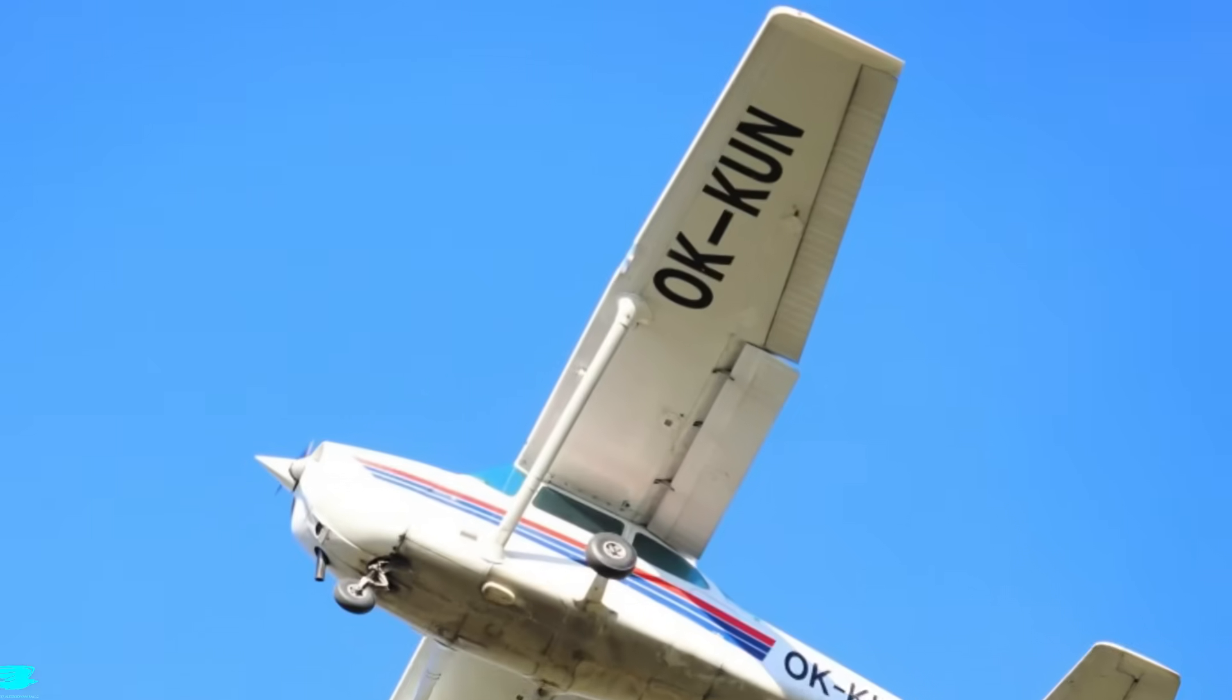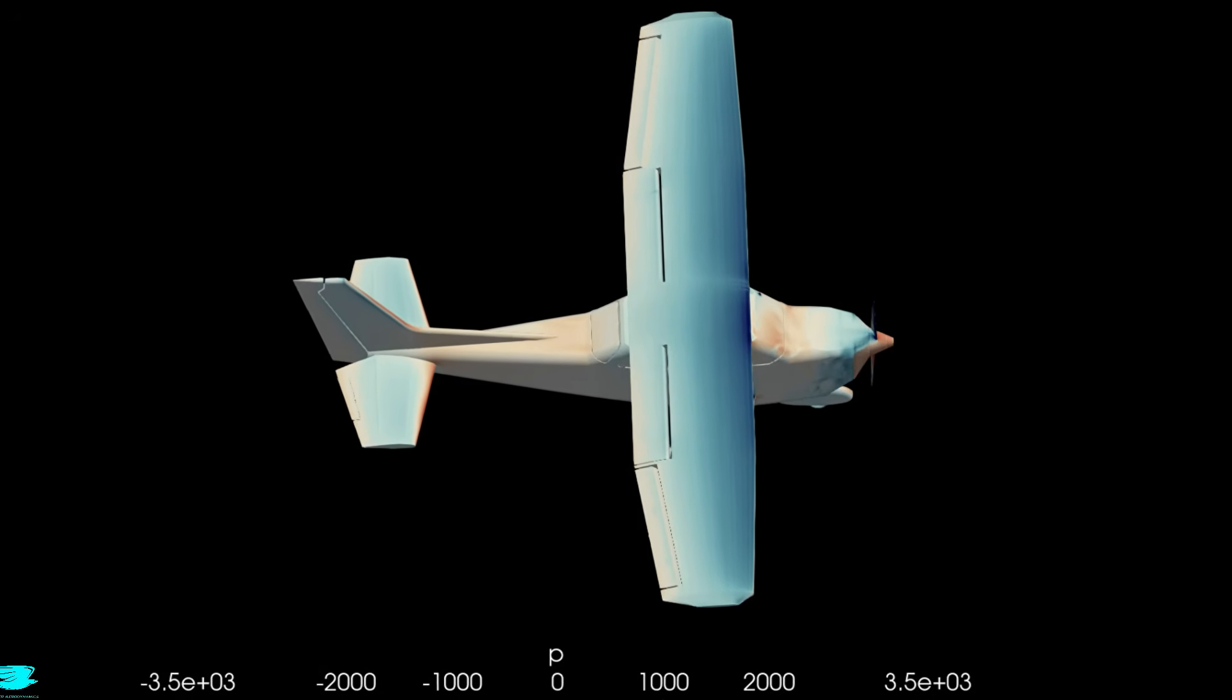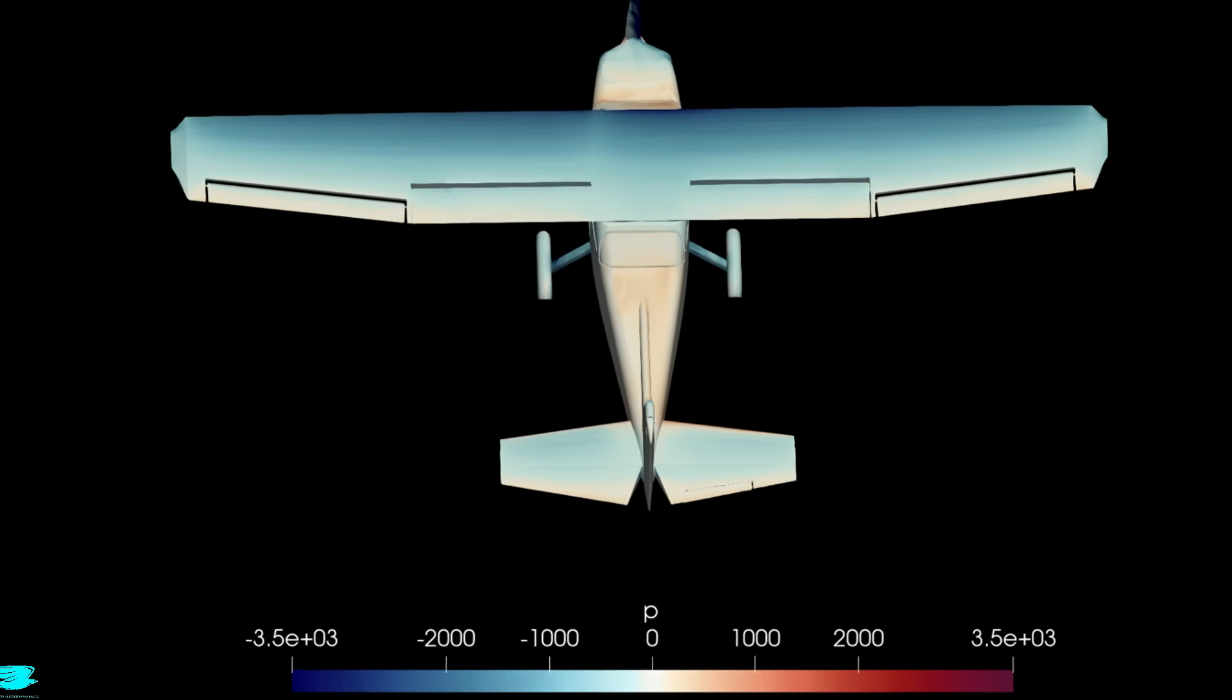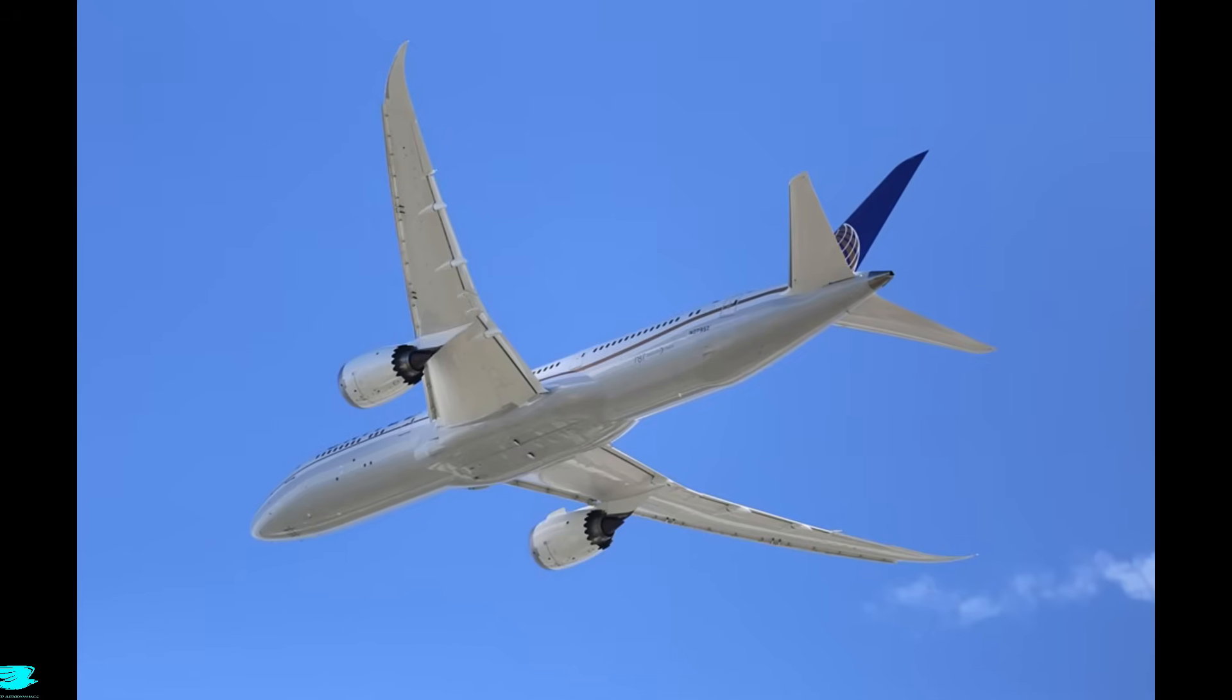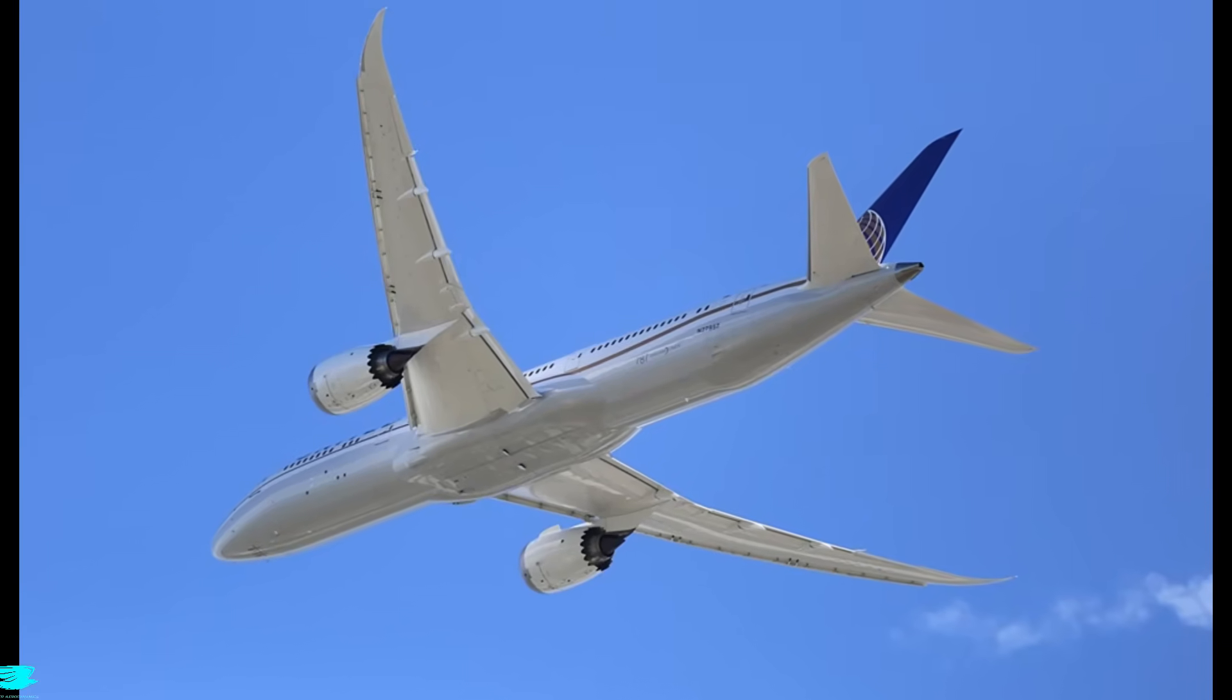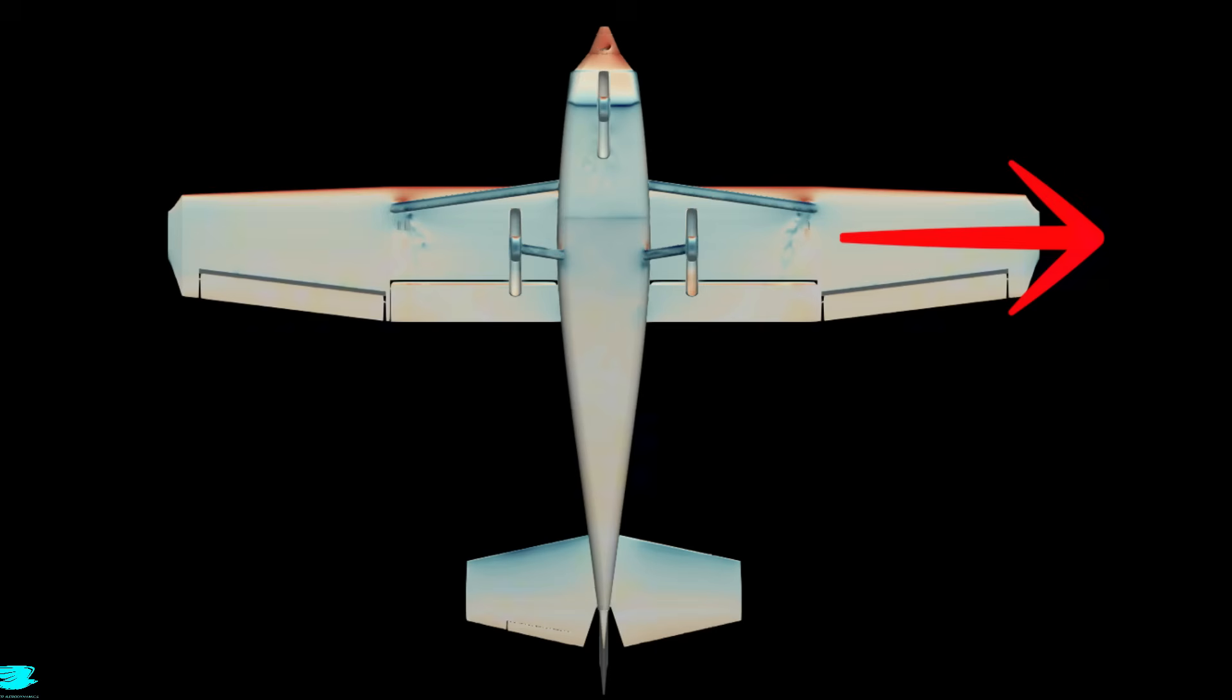So first of all, we have the wings. They're pretty basic and arguably quite bad for a few reasons. For example, they have a very low aspect ratio, only 7.32, compared to something like a Boeing 787, which is 9.59. That means the Cessna's wings are very long in the longitudinal direction but stubby in the width.